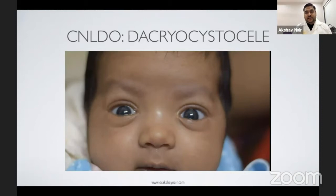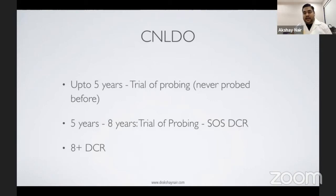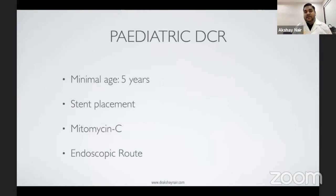Conservative compression in dacryocystoceles is not preferred — early probing is better. In children who have never been probed, a trial of probing can be offered up to age 8. Between ages 5 and 8, parents are advised that complex NLDO — with incomplete canalization, bony block, or deviated nasolacrimal duct opening — may require on-table DCR if probing fails. For children presenting beyond age 8, DCR is preferred directly. The cutoff of 5 years for DCR relates to sinus pneumatization being approximately 90% complete by that age. For pediatric DCRs, a stent is placed and mitomycin C is preferred; the external route is favored.